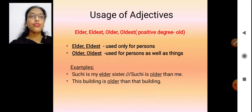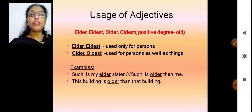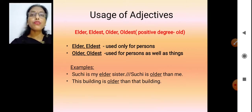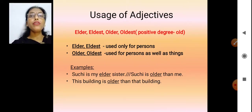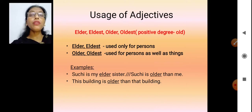Elder/eldest and older/oldest are both comparative and superlative degrees of 'old'. However, 'elder' and 'eldest' are used only for persons — for example, 'she is my elder sister'. But 'older' and 'oldest' can be used for persons as well as things — for example, 'this building is older than that building' or 'she is older than me'. So elder can only be used for persons, while older can be used for persons and things.